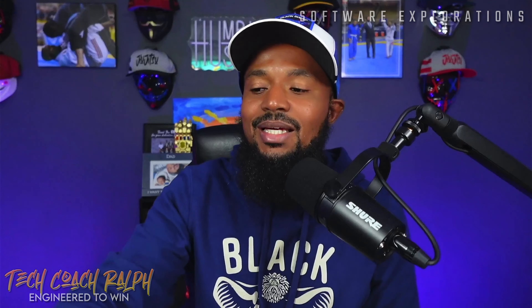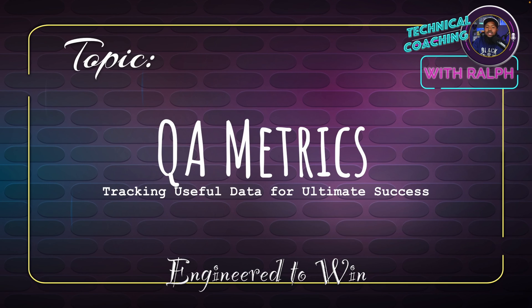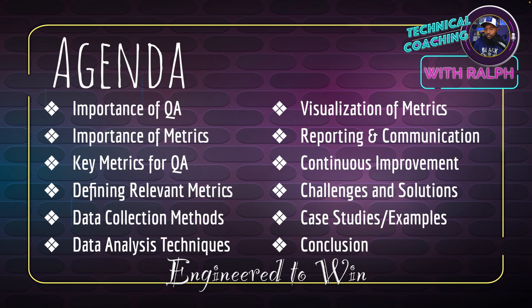QA metrics: tracking useful data for ultimate success. Our agenda today — we're going to break this up in two pieces because there's a lot of data, going into data engineering and data analytics. We'll cover: importance of QA, importance of metrics, key metrics to track, defining relevant metrics, data collection methods, data analysis techniques, visualization, reporting and communication, continuous improvement, challenges and solutions, case studies, and the conclusion.